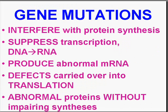Gene mutations can interfere with protein synthesis, if you believe in the one gene, one polypeptide or one protein theory. They can also suppress transcription from DNA to messenger RNA, or produce an abnormal messenger RNA on the basis of abnormal DNA. These defects can carry over into translation, into protein manufacture at the level of the ribosome, or they can produce abnormal proteins without impairing synthesis. All of these possibilities are not only possible, but they do happen.